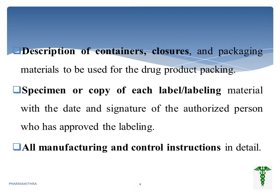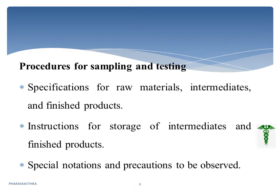If possible, they include a statement or copy of each label or labeling material with the date, signature, and approval. After that, they have to write the procedure for sampling and testing, starting with the specification of the raw material, intermediates, and finished product. Instructions for the storage of the intermediate as well as the finished product are included, and if any special precautions are needed, they have to be noted.